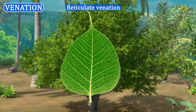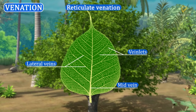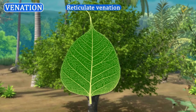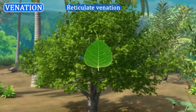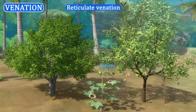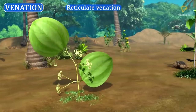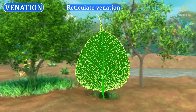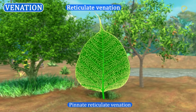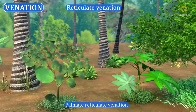Reticulate venation: The mid-vein produces many lateral veins and veinlets. Veinlets are repeatedly branched and form a network called reticulum. It is observed in dicots. Smilax and Dioscorea are monocots with reticulate venation. Reticulate venation is classified into two kinds based on the number of mid-veins: pinnate reticulate venation and palmate reticulate venation.